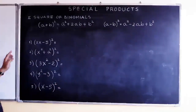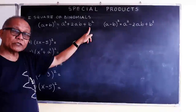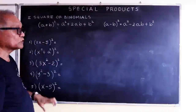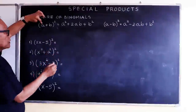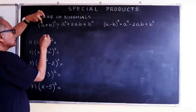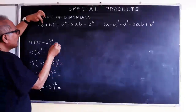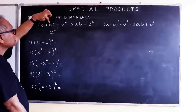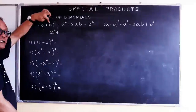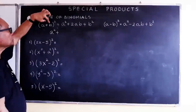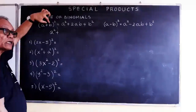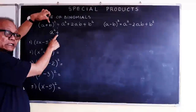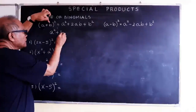How did we get this? The shortcut. We are doing the shortcut now — not the distributive property method. We square the first term: a times a is a squared. We square the second term — and even if this one is negative, because we are squaring it, negative times negative is still positive. So the last term is always positive: b times b is b squared.